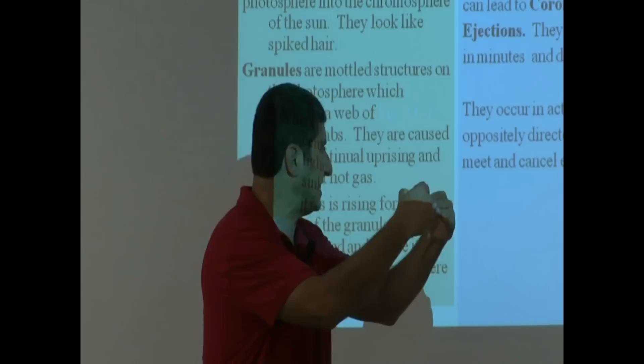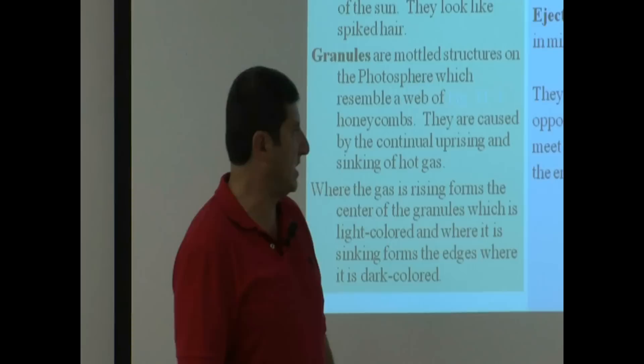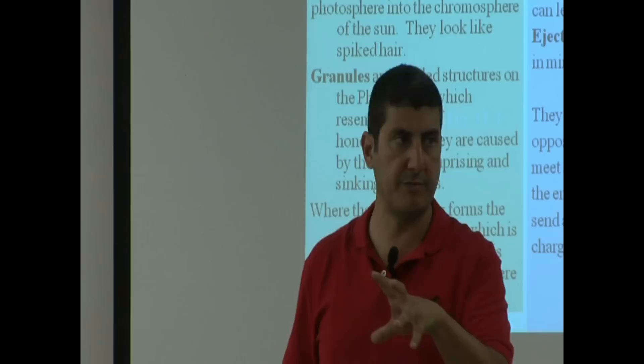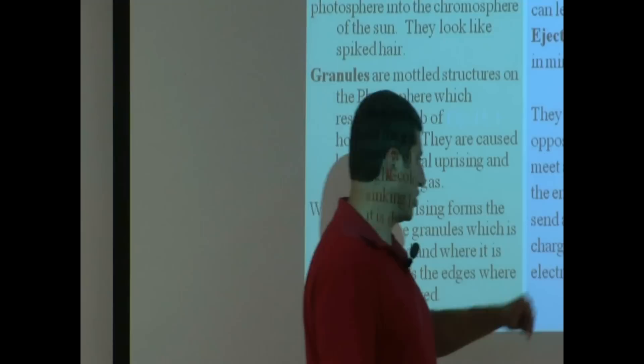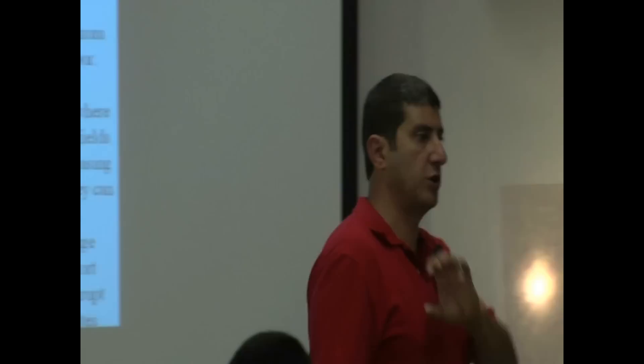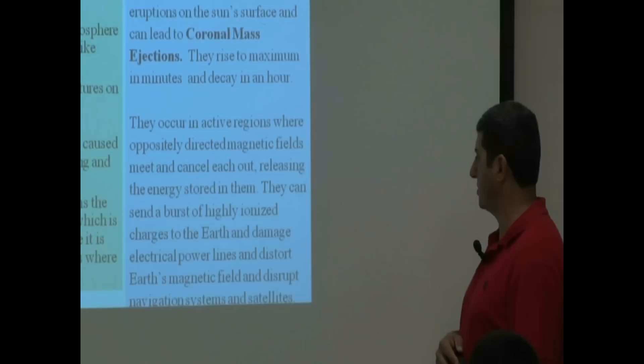They occur in active regions where the oppositely directed magnetic fields meet and cancel each other. So, one is coming this way. One is canceling, coming this way. The energy in them is released, releasing the energy stored in them. They can send a burst of highly ionized charges to the earth. You remember the solar wind that we were talking about? But they can send so much strong solar wind that it will damage our navigation systems. It will damage electrical power lines, distort earth's magnetic field, and disrupt navigation systems and satellites. We're talking pretty serious stuff. They categorize solar flares according to their power. There are some that aren't as powerful. There are some that are very powerful. So, lots of stuff can happen.